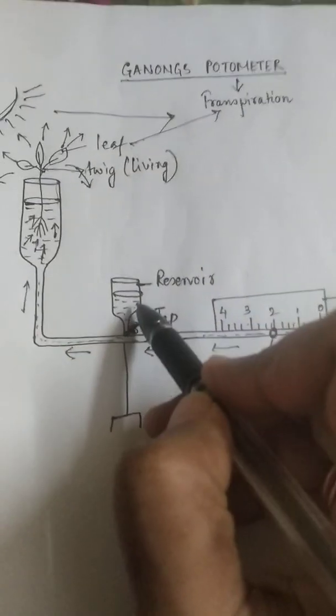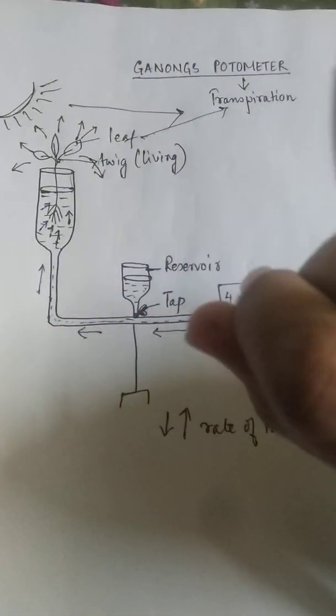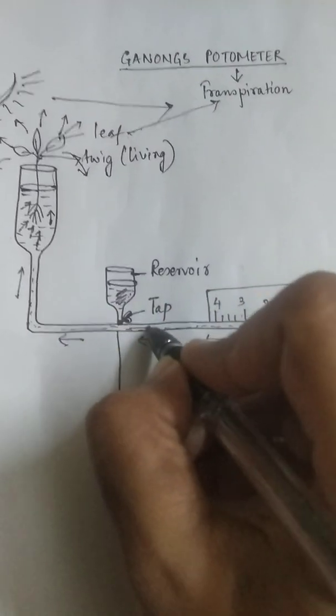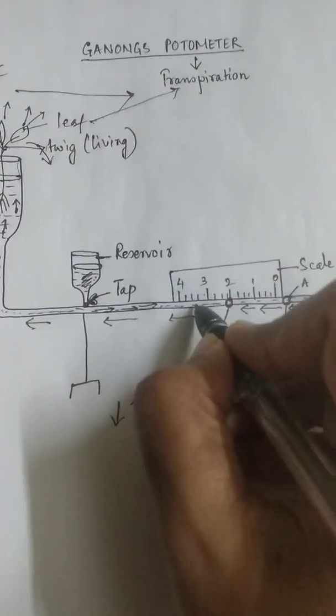Now how will I shift it? This reservoir will help me in that case. So the moment I turn on the tap the water from this reservoir will flow through this pipe in both the directions. So it will be flowing in this direction also.